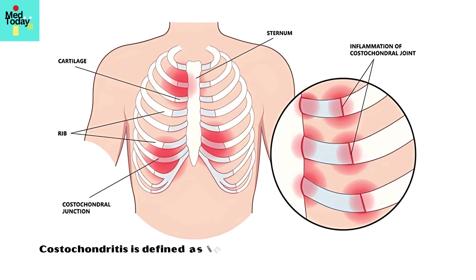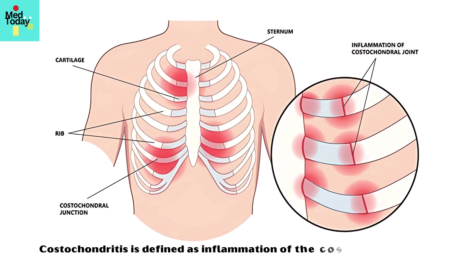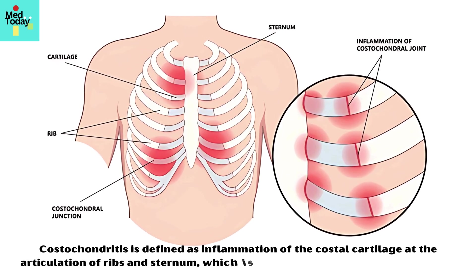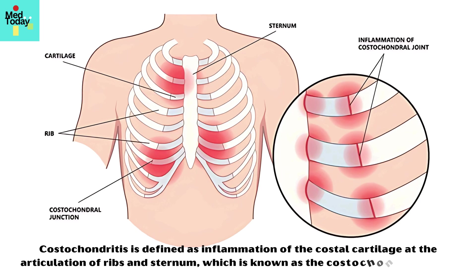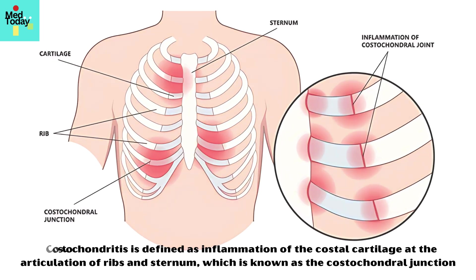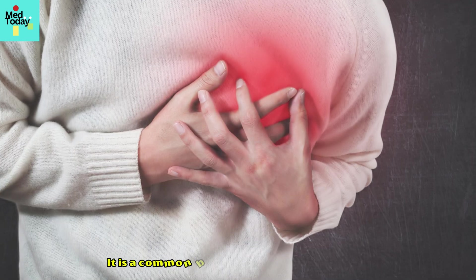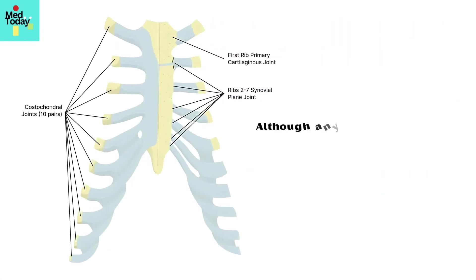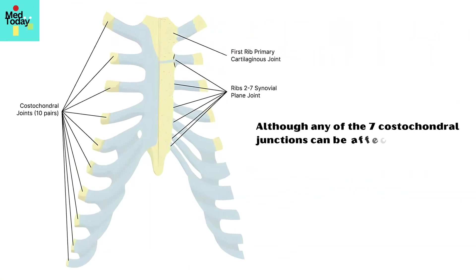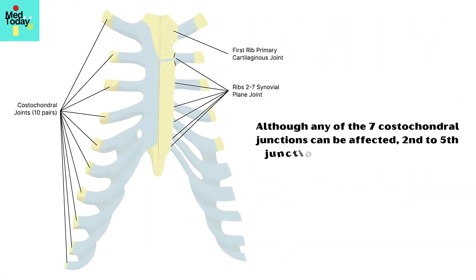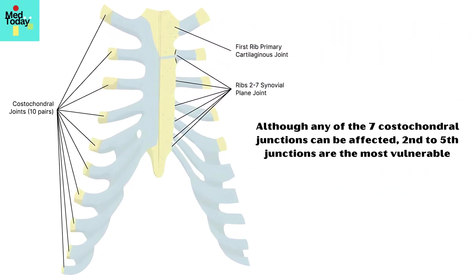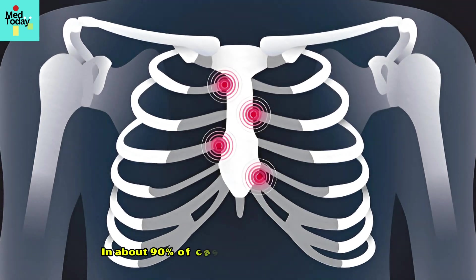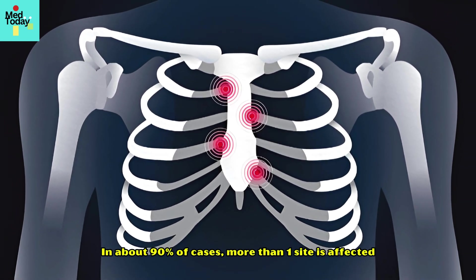Costochondritis is defined as inflammation of the costal cartilage at the articulation of ribs and sternum, known as the costochondral junction. It is a common benign cause of acute chest pain. Although any of the seven costochondral junctions can be affected, the second to fifth junctions are the most vulnerable. In about 90 percent of cases, more than one site is affected.